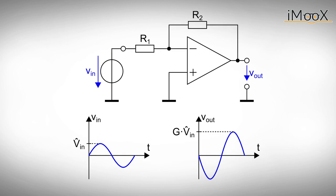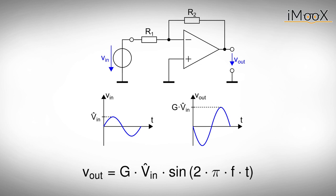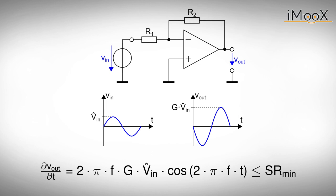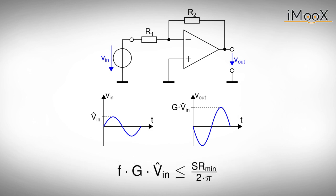Let us investigate a small example. We consider our inverting amplifier and apply a sinusoidal input signal. Multiplying Vin with the gain gives the output voltage. The change of output voltage with time must be lower than the minimum slew rate. To obtain the change in output voltage we calculate the derivative with respect to time. For the maximum change in output voltage we can set the cosine to one. If either the frequency, the gain, or the input signal amplitude is given, the slew rate puts a limit on the product of the other quantities. So plan ahead carefully and use the datasheets to pick the right operational amplifier.